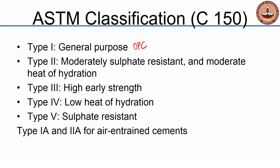Type 3 is high early strength cement — in India we call it rapid hardening cement. Type 4 is low heat of hydration cement, and Type 5 is sulphate resistant cement or SRC. So these four cement types — OPC, rapid hardening cement, low heat cement, and sulphate resistant cement — you will find in every standard around the world. But Type 2, moderately sulphate resistant and moderate heat of hydration, is something you will find only in American standards.